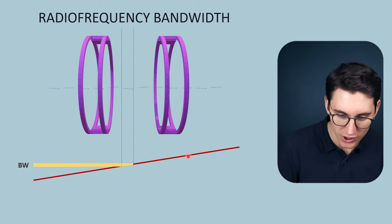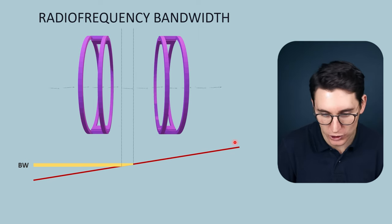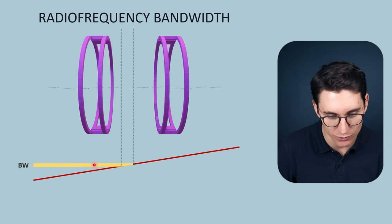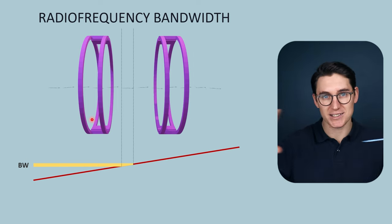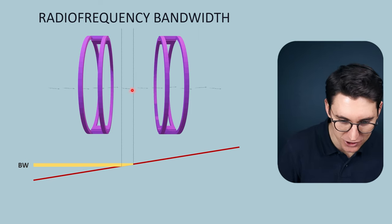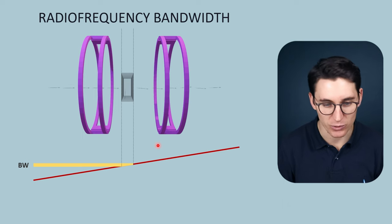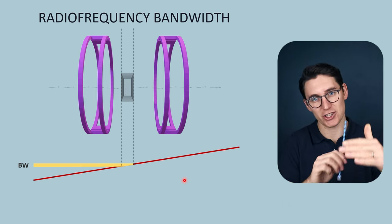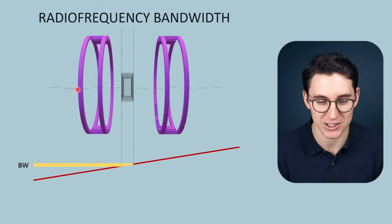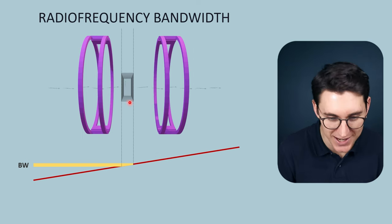You can think of the gradient as representing the different precessional frequencies, which are proportional to the magnetic field strength along the z-axis. The RF bandwidth shows the range of radio frequencies exposing the entire patient. Because this RF bandwidth matches the precessional frequency of a specific slice, we get nuclear magnetic resonance within that particular slice — those spins gain transverse magnetization and give us measurable signal. The other protons won't exhibit NMR because their precessional frequencies don't match, so we've selected a specific slice.